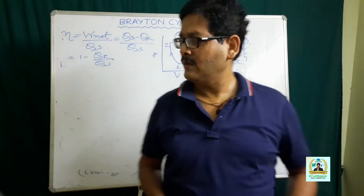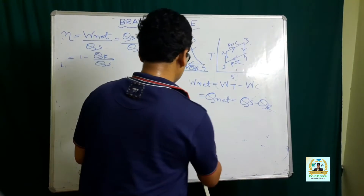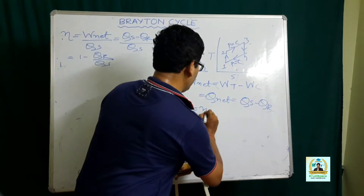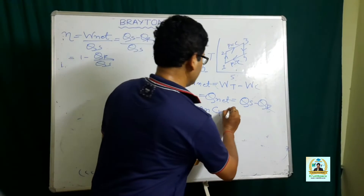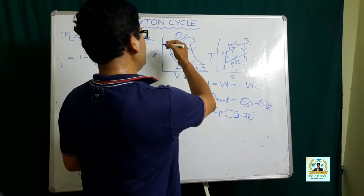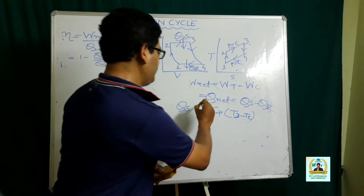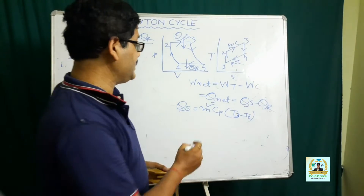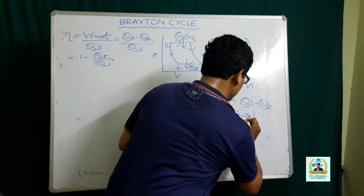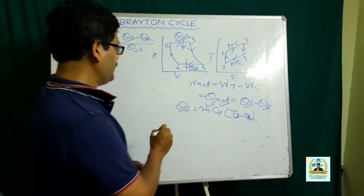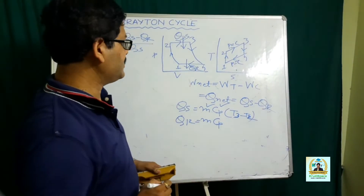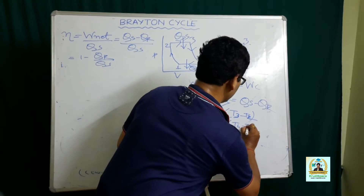First we have to find out what is heat supplied. Heat supplied equals m·Cp·(T3 − T2), because heat is supplied in process 2-3, where m is the mass of the working substance and heat addition takes place at constant pressure — that is why we use Cp, not Cv. As far as heat rejection is concerned, that is m·Cp·(T4 − T1), and again we use Cp because heat rejection also takes place at constant pressure.